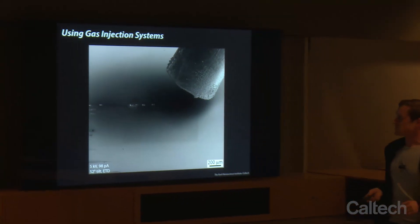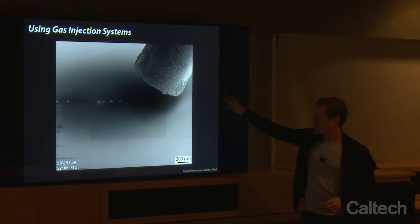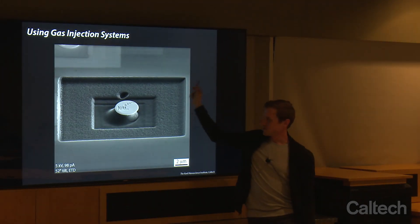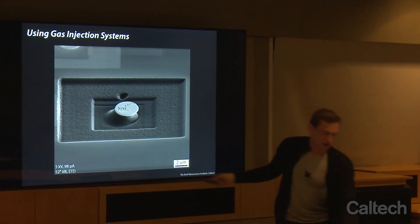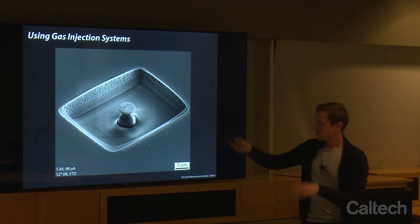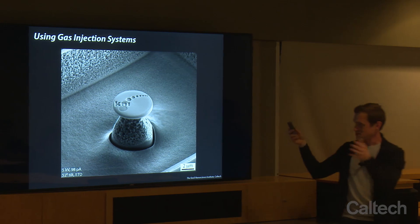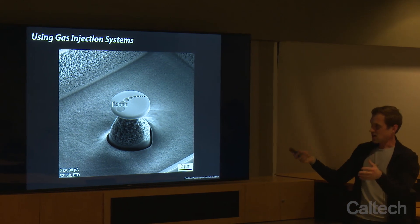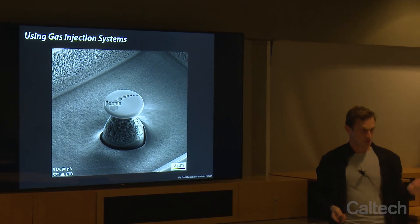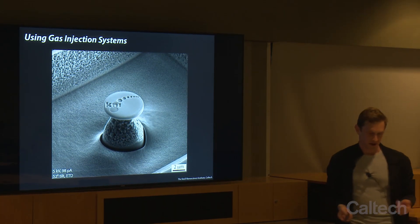This is what one of those gas injection system needles looks like. Here's a little pillar I was making — it's very directional. You can rotate it back and forth and make a little device like this. Not very functional, but this is an example of depositing platinum, doing etching directly with a bitmap, and then etching with xenon difluoride.